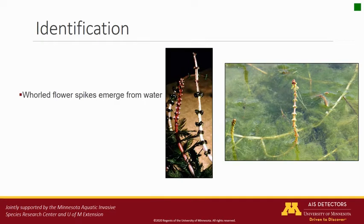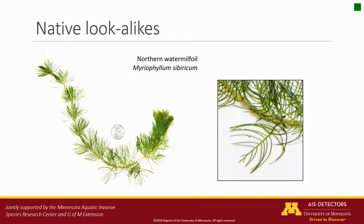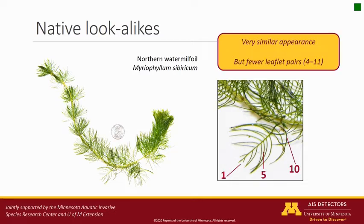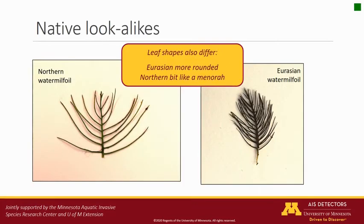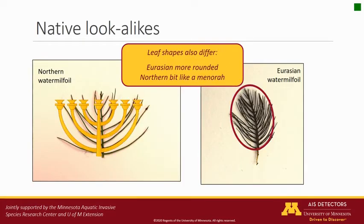Whorled flower spikes emerge from the water when Eurasian water milfoil reaches the surface. A common, close relative of Eurasian water milfoil is likely to offer the biggest challenge to your ID skills. Northern water milfoil has a very similar appearance, but it has fewer leaflet pairs, typically 4 to 11, rather than the 12 to 20 found in Eurasian water milfoil. The overall shapes of their leaves differ too. Eurasian water milfoil has a more rounded appearance to its leaves, while Northern water milfoil leaves are shaped a bit like a menorah.